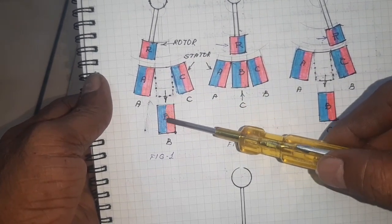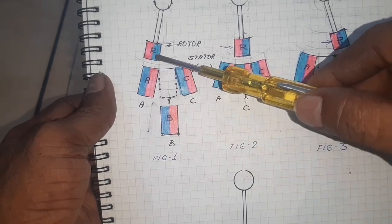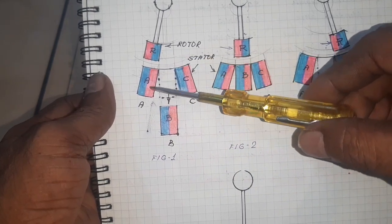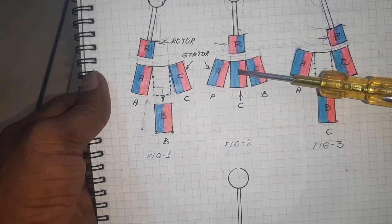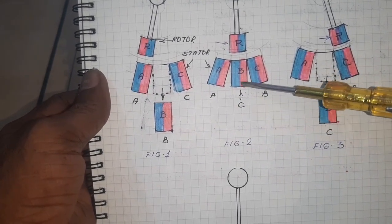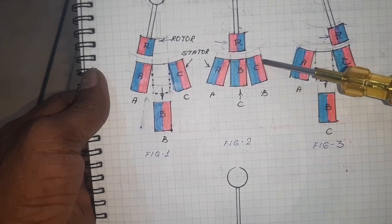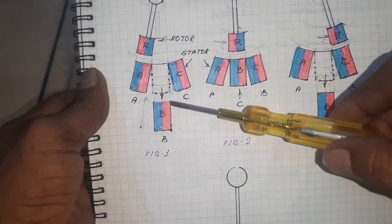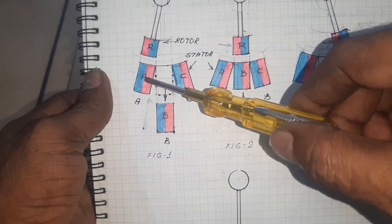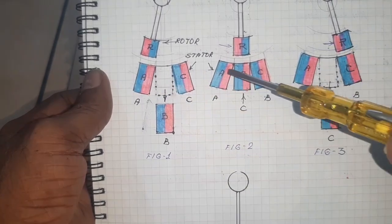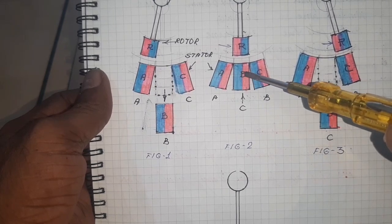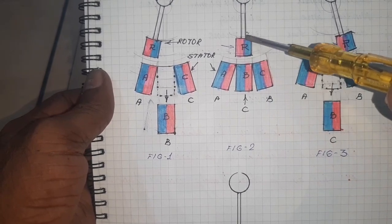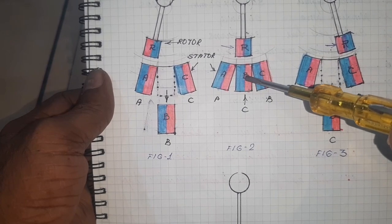When I remove the center magnet, the rotor magnets align with the A magnet. Now I am going to insert the center magnet. What happens, the three magnets are forming a single magnet so the neutral axis is shifted from here to here. The neutral axis shifted from here to here, that's why the rotor magnets align with the B magnet.